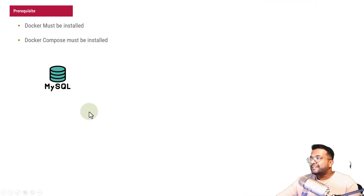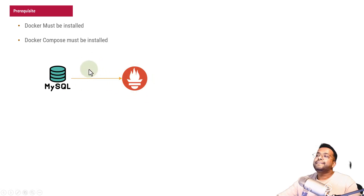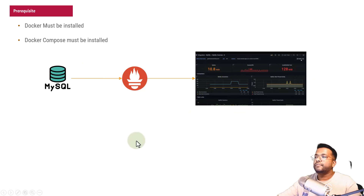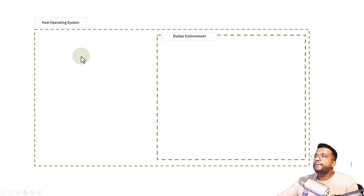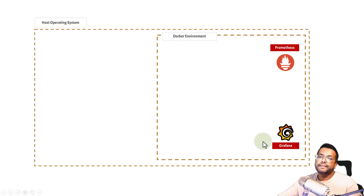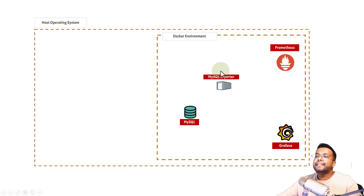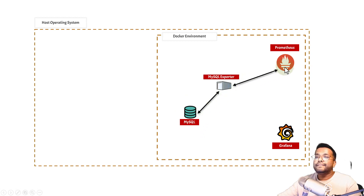What we are going to do: there is a MySQL server and this MySQL server will push metrics to the Prometheus server using a MySQL exporter, and then we'll plot beautiful graphs from it. There is a host operating system — Windows or Linux — and then there's a Docker environment. We are going to install a Prometheus container, a Grafana container, a MySQL container, and a MySQL exporter container. The MySQL exporter will scrape or pull metrics from the MySQL server, and then the Prometheus server will scrape metrics from this MySQL exporter.